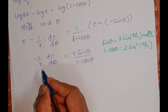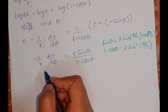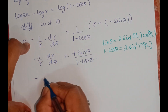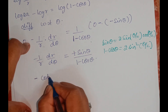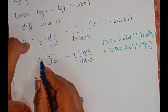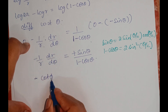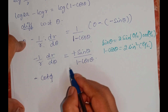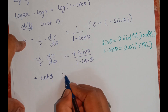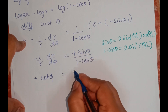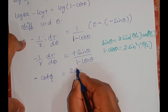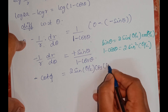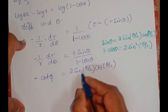Also, 1/r · dr/dθ is nothing but cot φ, so the left side becomes -cot φ. The right side becomes 2·sin(θ/2)·cos(θ/2) divided by 2·sin²(θ/2), giving cos(θ/2)/sin(θ/2).